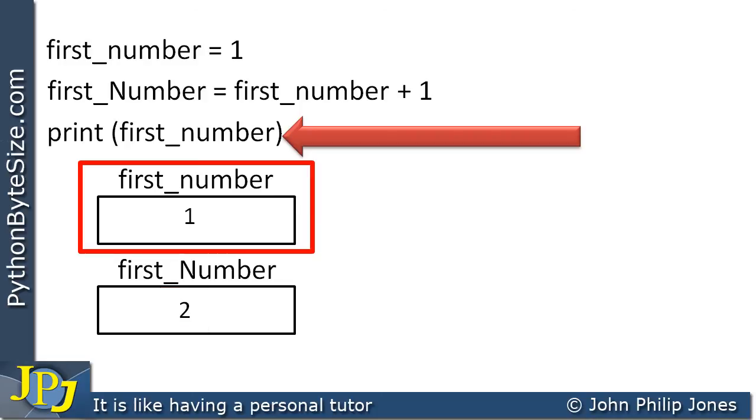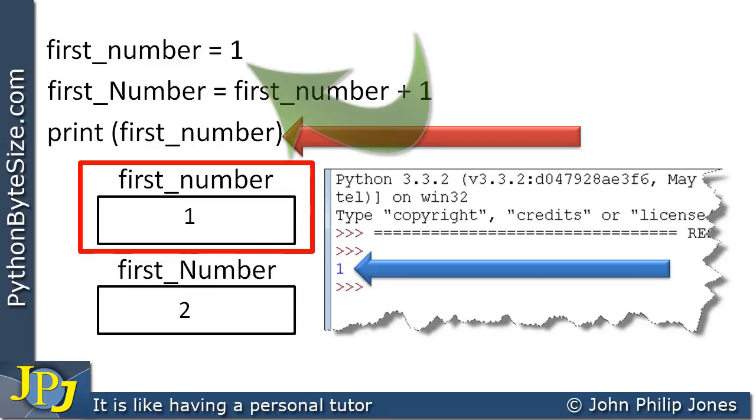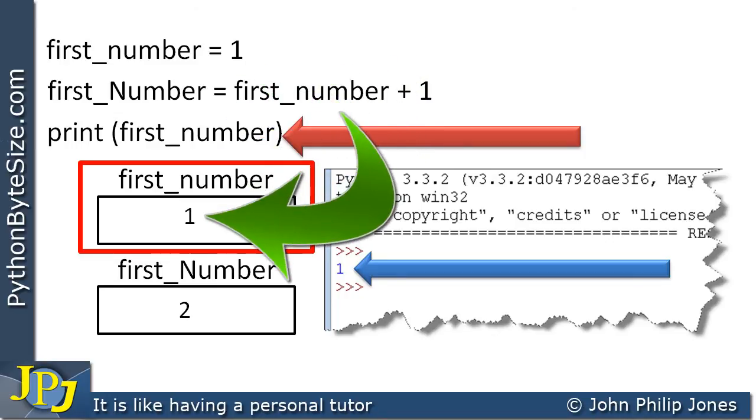Consequently, when we execute the print statement, what will happen? We'll see one appearing because there was one stored in this variable.